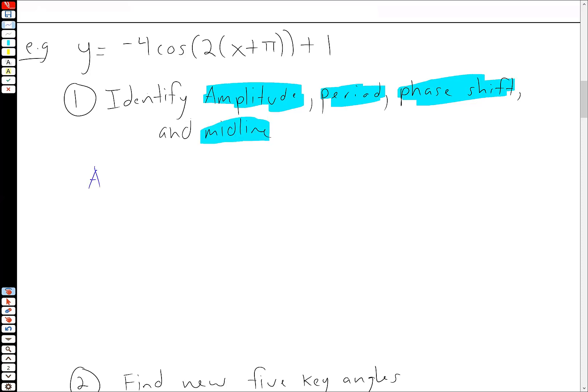Okay. So our amplitude in this case, remember that's coming from this number here is 4. Period is 2π divided by this number, which in this case is just π.